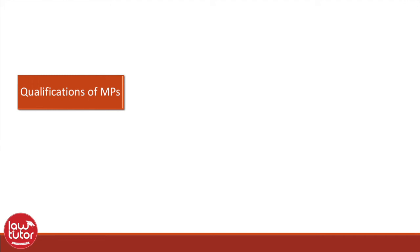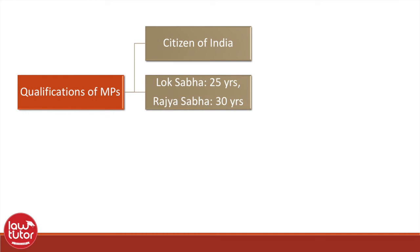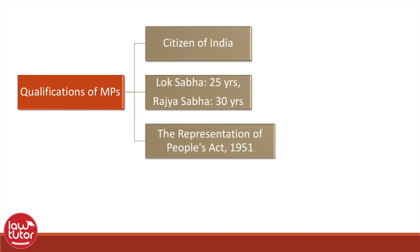Article 84 of the Indian Constitution prescribes the qualifications for a person to be a Rajya Sabha or Lok Sabha member. Firstly, the person should be a citizen of India. Secondly, the person should be at least 25 years of age to be a member of Lok Sabha, and at least 30 years of age to be a member of Rajya Sabha. Parliament can also make laws to prescribe other qualifications under Article 84, and has done so through the Representation of People's Act of 1951.